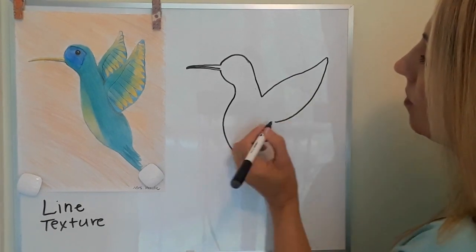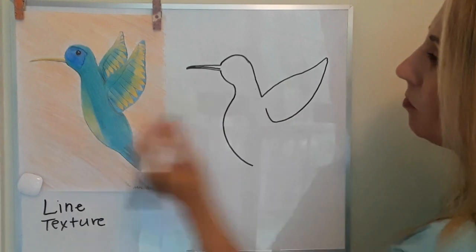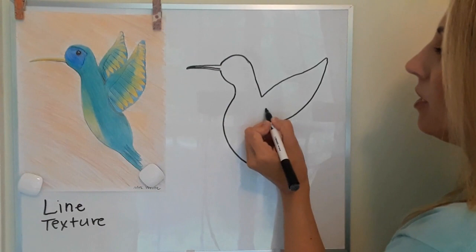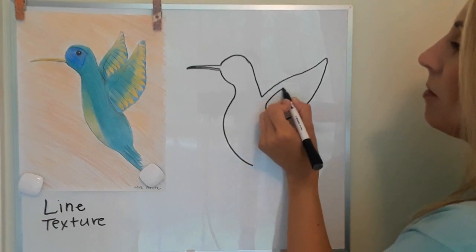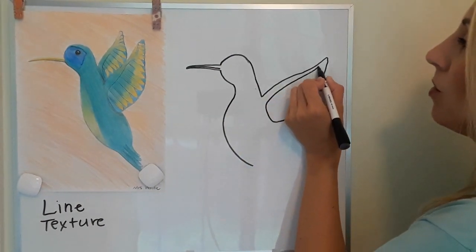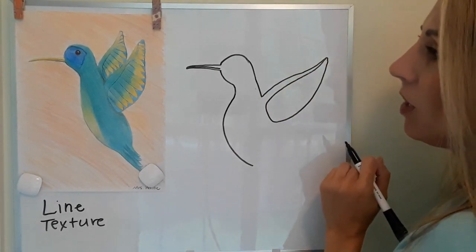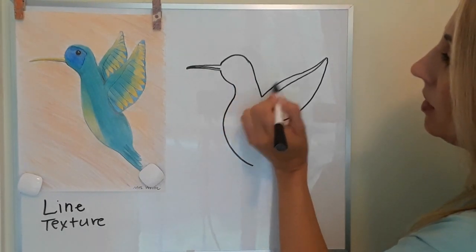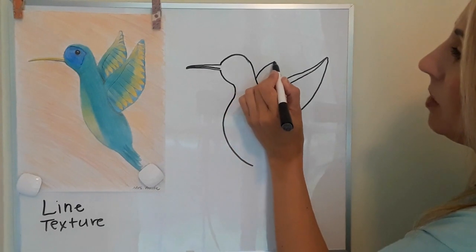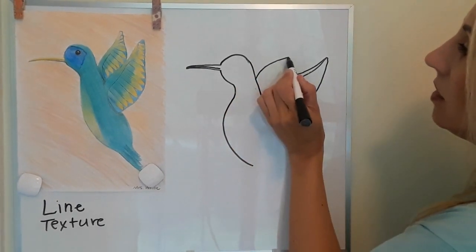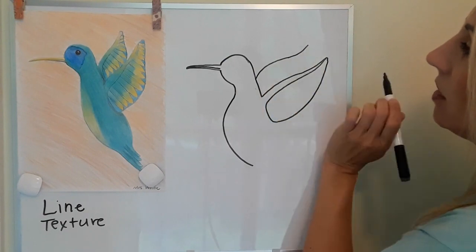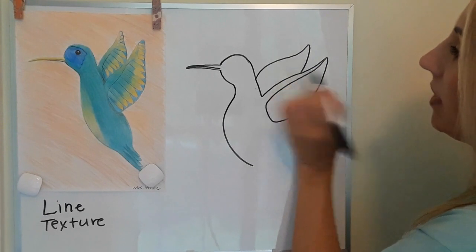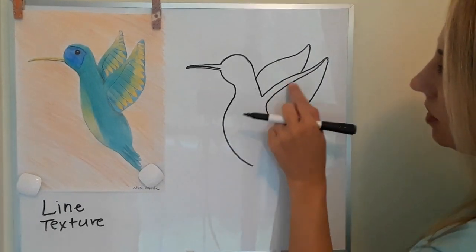Doing another little curve and then a line up. Then you're going to take this and bring it up and bring it close to the wing. Now let's go ahead and do the second wing — the same motion: up a little bit, down a little bit, a little upside-down U, and then bring it back down and do this little part following the shape of that line.